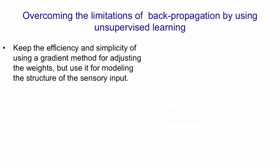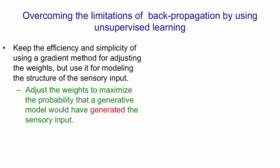So one way to overcome the limits of backpropagation is by using unsupervised learning. The idea is that we want to keep the efficiency and simplicity of using a gradient method and stochastic mini-batch descent for adjusting the weights. But we're going to use that method for modelling the structure of a sensory input, not for modelling the relation between input and output. So the weights are going to be adjusted to maximise the probability that a generative model would have generated the sensory input.